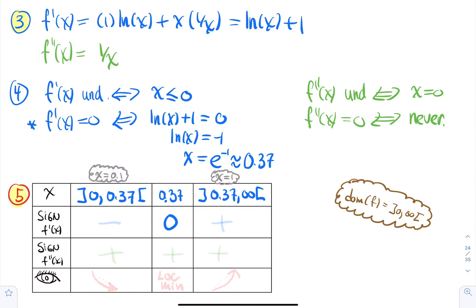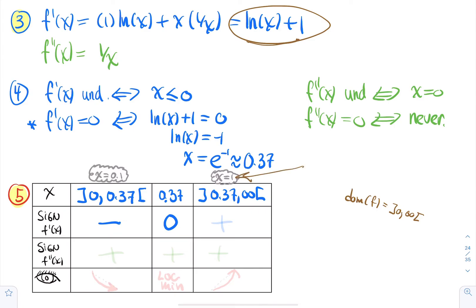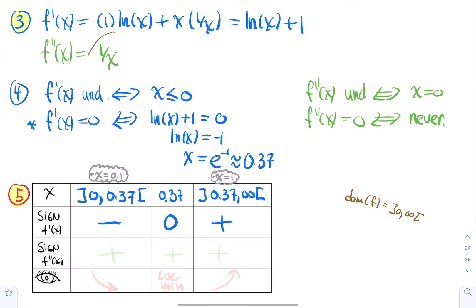To evaluate the sign table: between 0 and 0.37, use x = 0.1 — a calculator gives ln(0.1) + 1 as negative. For x > 0.37, use x = 1: ln(1) + 1 = 0 + 1, which is positive. For f'' = 1/x, since x is always positive in the domain, f'' is always positive.